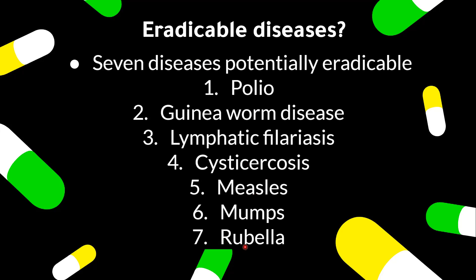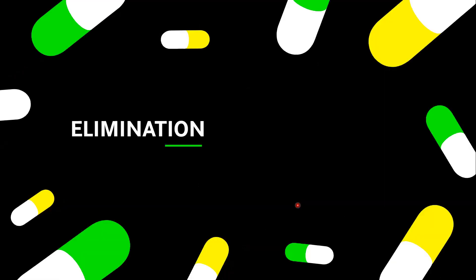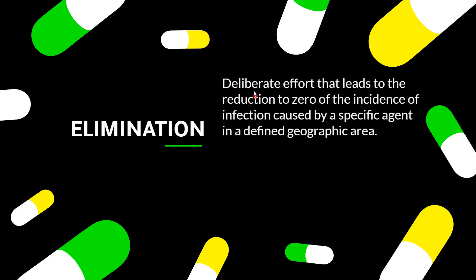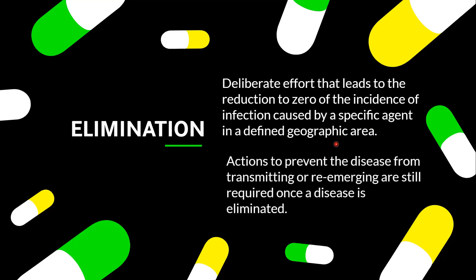Now, what is elimination? Elimination is the effort to reduce to zero the incidence of an infection caused by a specific agent in a defined geographic area. This term is very important — the pathogen is reduced to zero in a defined geographic area, and actions need to be taken to prevent the re-emergence of the disease once it has been eliminated.